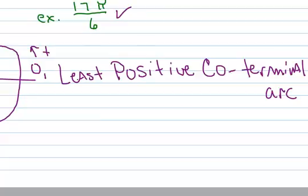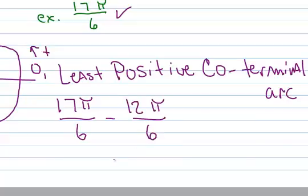I want to find the equivalent least positive coterminal arc so I don't have more than one wrap of the circle. The way we do that is we start at 17π/6, we subtract 2π. The equivalent for 2π is 12π/6 because my denominator is 6.